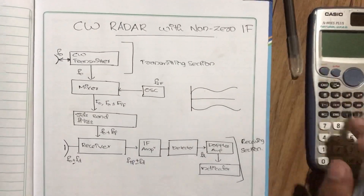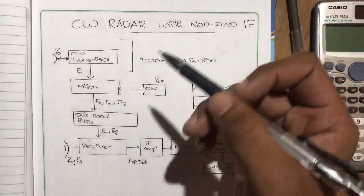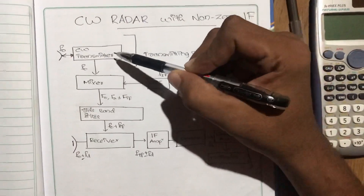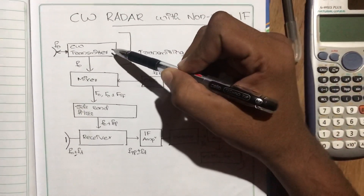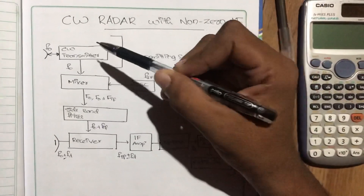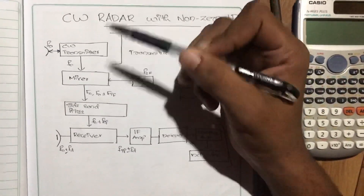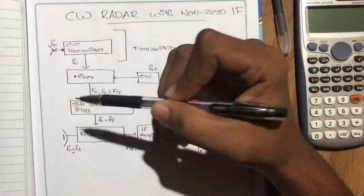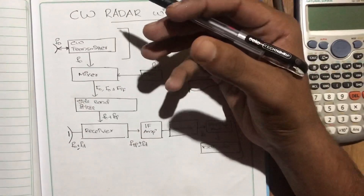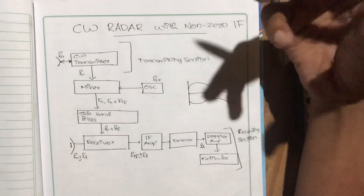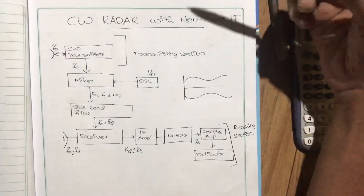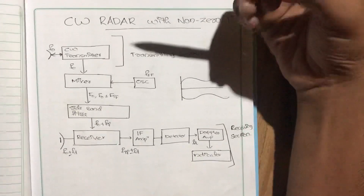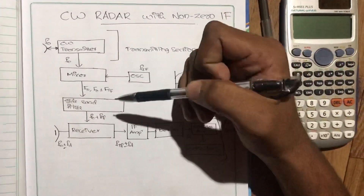This is CW Radar with Non-Zero IF. This is the first radar. Here are two antennas: one transmitter antenna and one receiver antenna. Because of the two antennas, the first one is the transmission and receiving antenna. That antenna is the signal leakage. This is the transmission and receiving antenna.